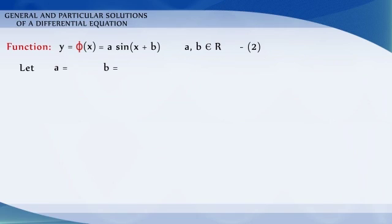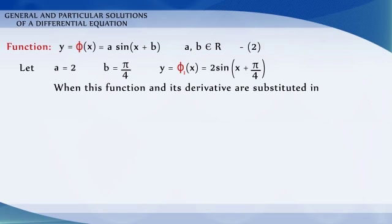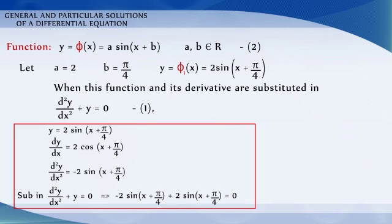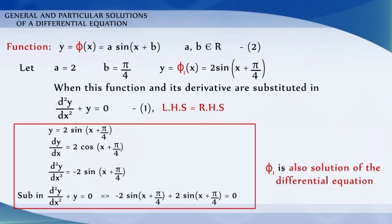Let a and b be given particular values — say, a is equal to 2 and b is equal to pi by 4. Then we get a function y is equal to phi 1 of x is equal to 2·sin(x + π/4). When this function and its derivatives are substituted in the equation d squared y by dx squared plus y is equal to 0, we observe that the left hand side is equal to the right hand side. Therefore, phi 1 is also a solution of the equation.